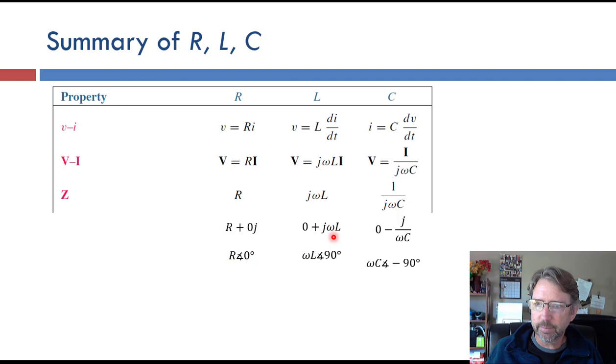0 plus j omega L. So this one is purely imaginary and no real part, which means it's at 90 degrees angle, and so forth. So these are the impedances, and we treat impedances just like resistors when we do the circuit analysis with Ohm's law and everything.